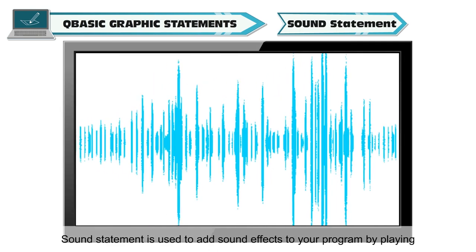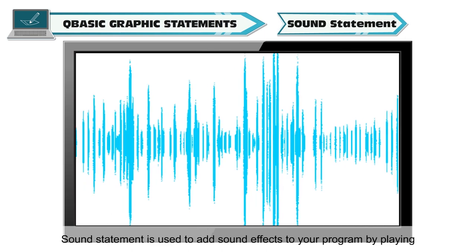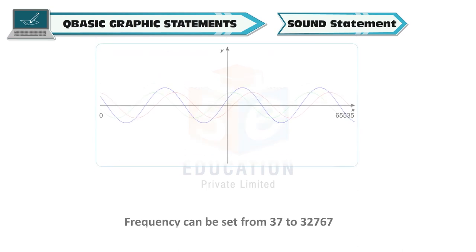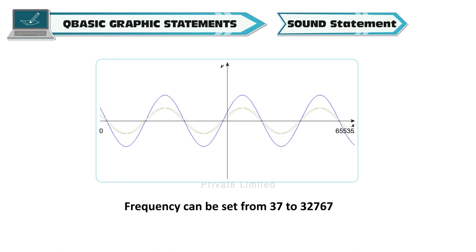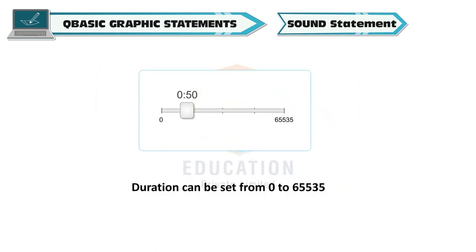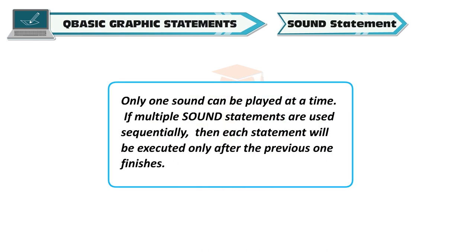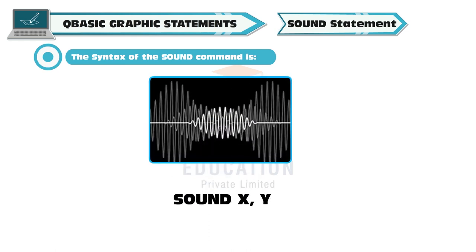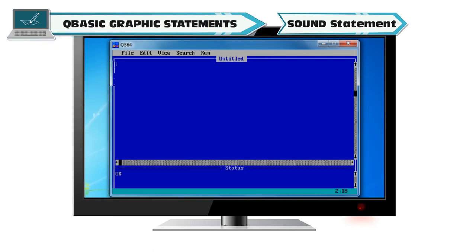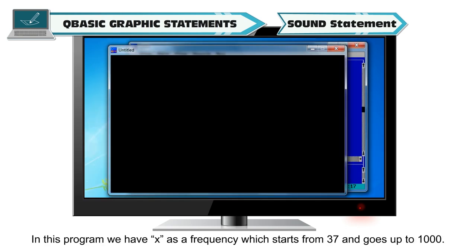Sound statement is used to add sound effects to your program by playing a sound frequency for a specified duration. Frequency can be set from 37 to 32,767. Duration can be set from 0 to 65,535. Only one sound can be played at a time. If multiple sound statements are used sequentially, each statement will be executed only after the previous one finishes. The syntax of the sound command is: SOUND x,y. Example: DIM x AS INTEGER, FOR x = 37 TO 1000, SOUND x,1, NEXT x. In this program, x is the frequency which starts from 37 and goes up to 1000, producing sound for duration 1.